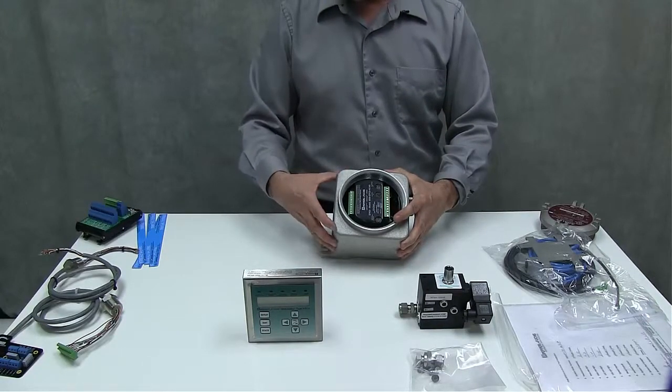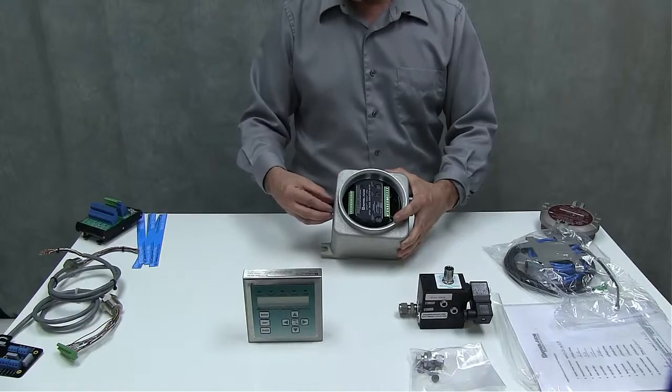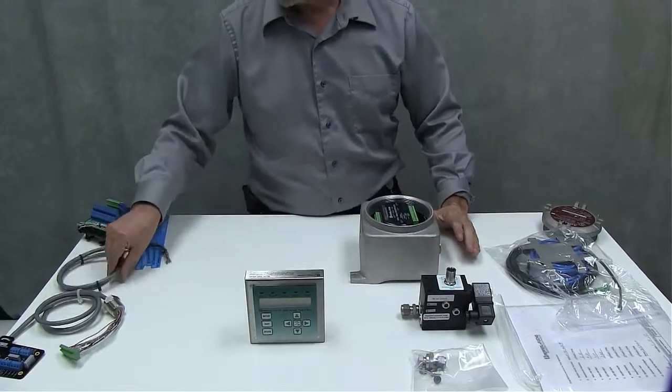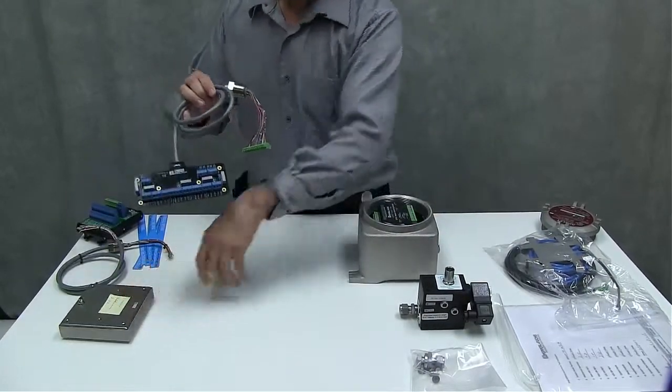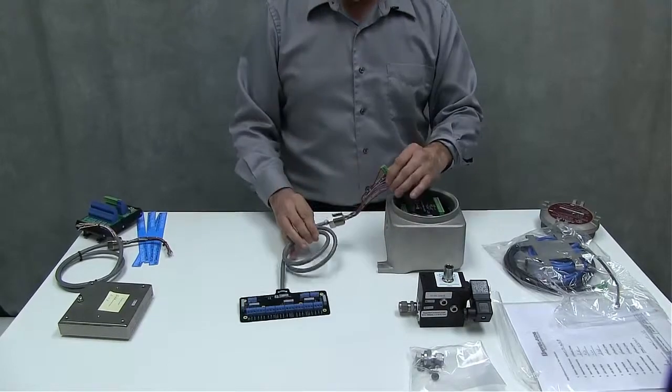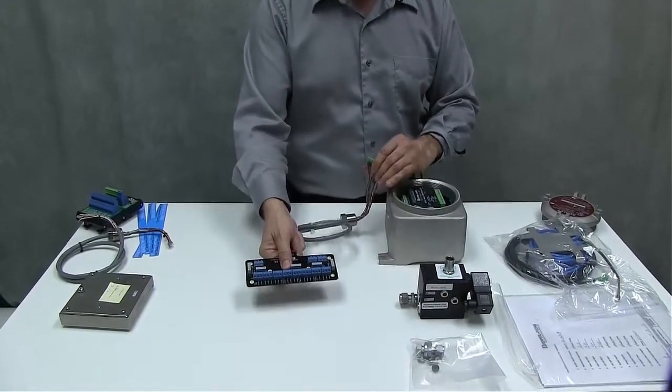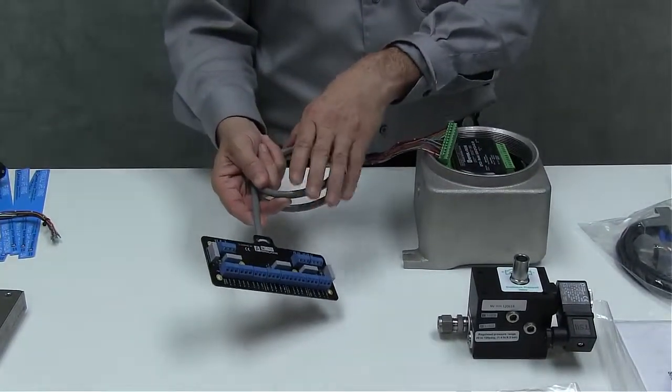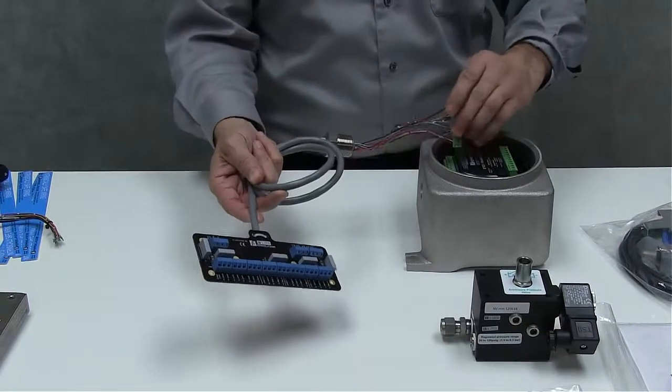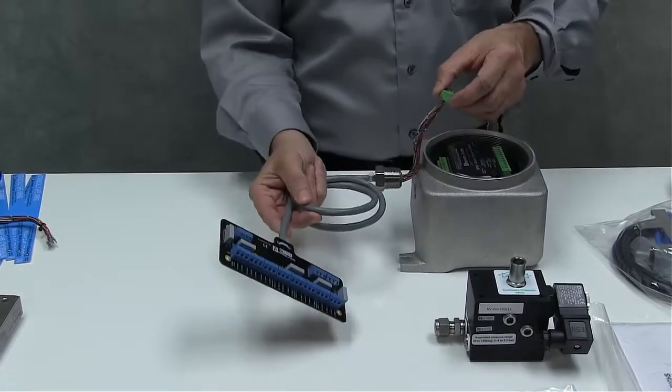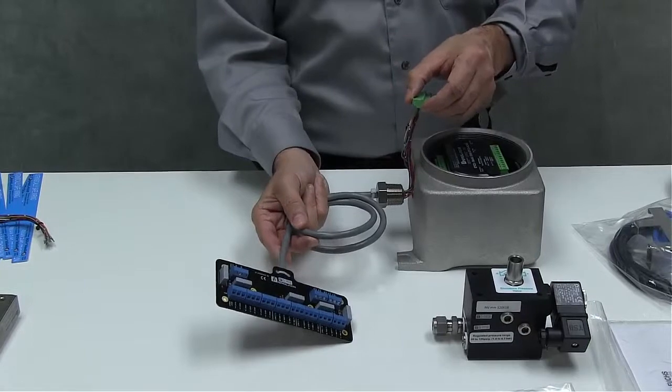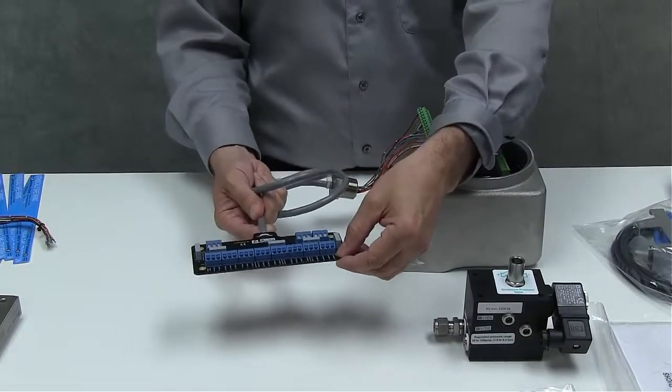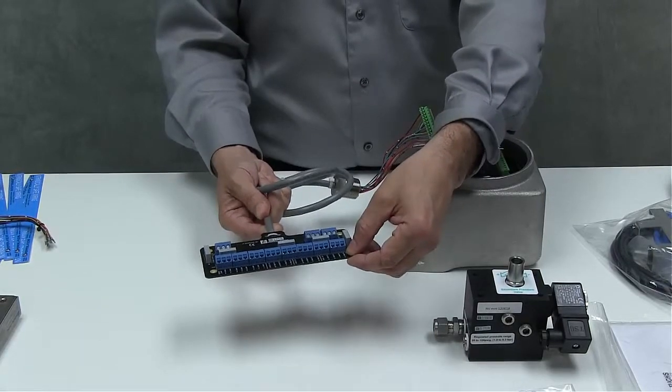So this is explosion proof so you have to have an explosion proof seal on here. In the past we have used this type of device where you can get the IS termination board with this cable harness and you had to order this to a specific length in order for your specific application. And it wired right on there, terminated onto this EXD box and it was very hard to mount this because it wasn't really designed to be panel mounted into an enclosure.